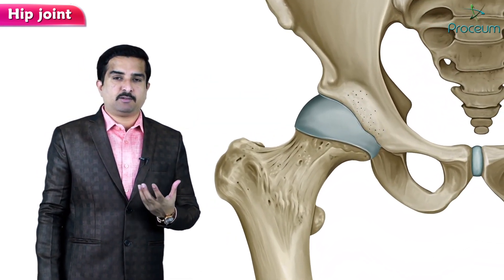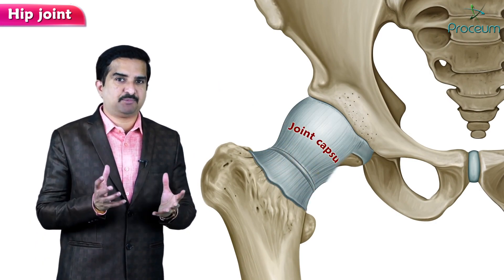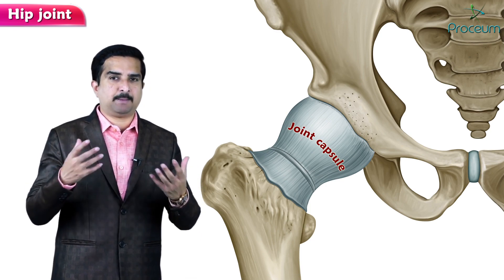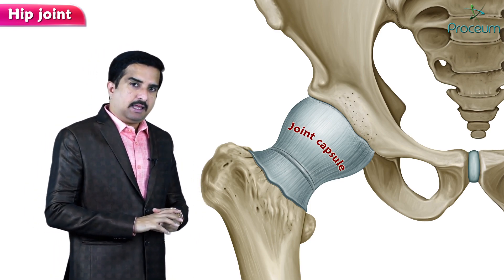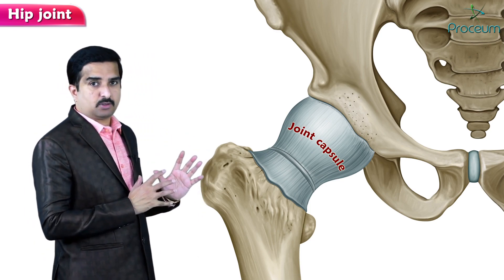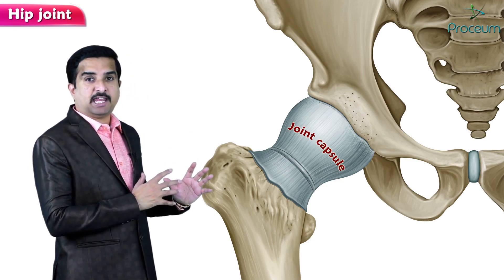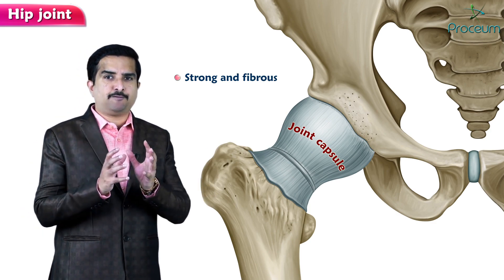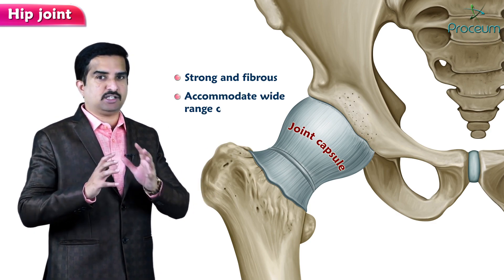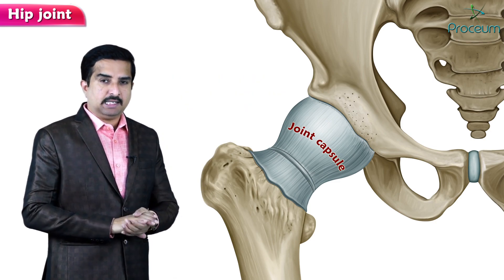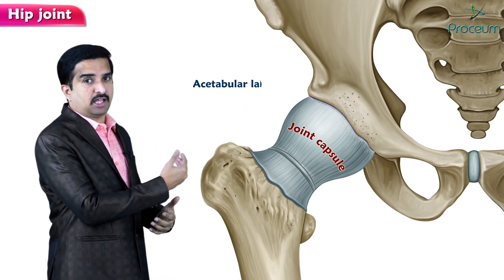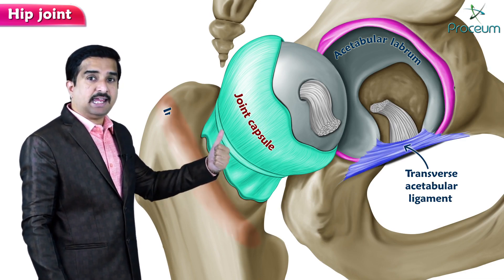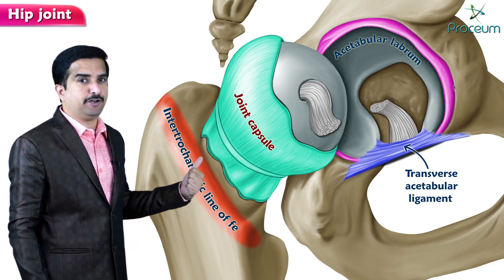Now let us concentrate on the joint capsule of the hip joint. The capsule is pretty strong and fibrous, but loose enough to accommodate a wide range of movements. It attaches to the acetabular labrum, the transverse acetabular ligaments, and the intertrochanteric line of the femur.